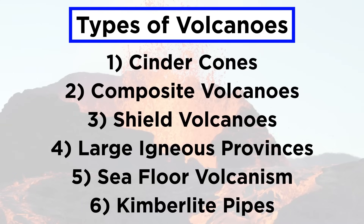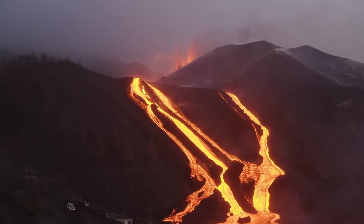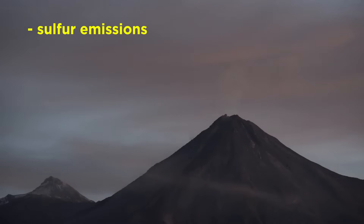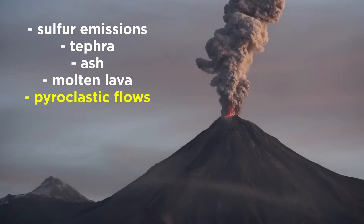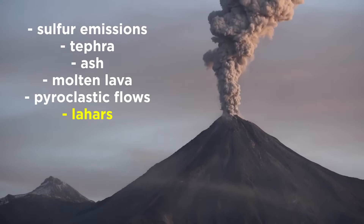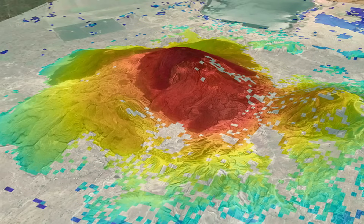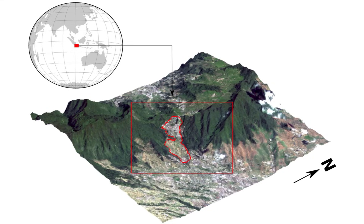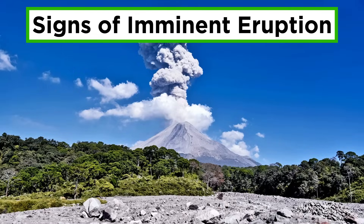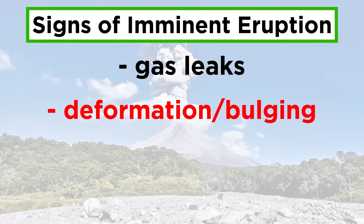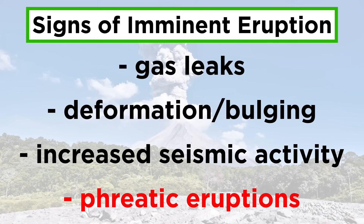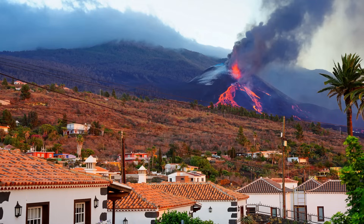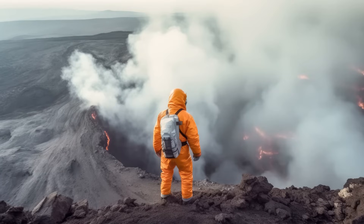That covers the types of volcanoes and their formation. While volcanoes are fascinating and awe-inspiring, they can also be extremely deadly and dangerous. Sulfuric gas emissions, razor-sharp tephra, lung-filling ash, molten lava, pyroclastic flows, and fast-moving mud flows of volcanic ash called lahars cause widespread health effects and property destruction. However, with new developments in seismometers and satellite measurements of ground deformation, volcanologists can monitor the telltale signs of volcanic eruptions, including gas leaks, deformation or bulging around the volcano, increased seismic activity, and phreatic eruptions where steam is released from volcanic vents.